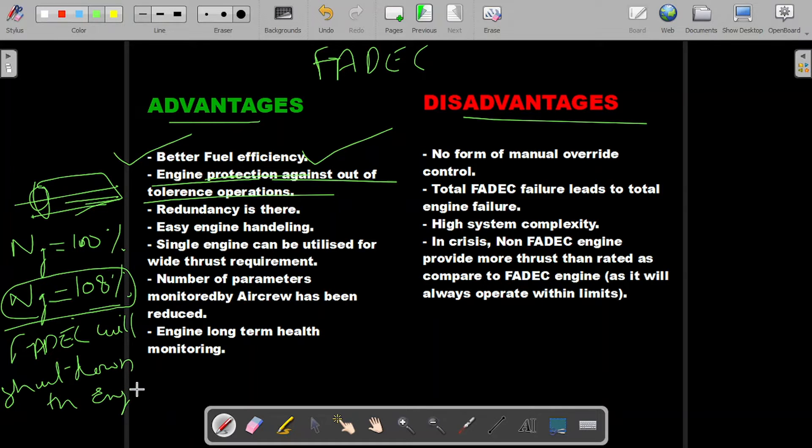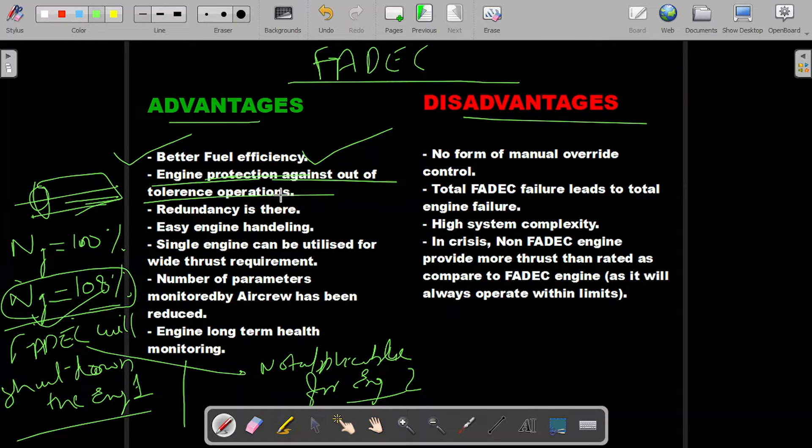If there are two engines, it'll shut down engine one. But FADEC also ensures that if the RPM of the gas generator is raised in the first engine, this condition should not be applicable in engine two. That's how you can do the programming and utilize FADEC for better operations. If both engines are going above 108%, ideally both should shut down. But if FADEC system is there, it will ensure that if one engine is shutting down because of overspeed, the other engine should not shut down. Redundancy is there.